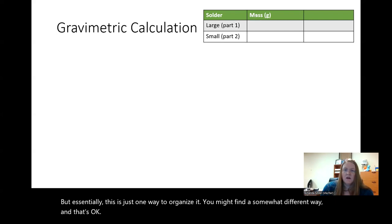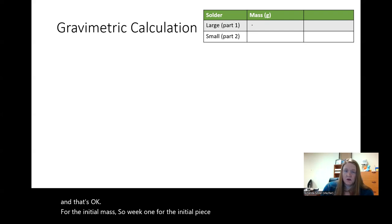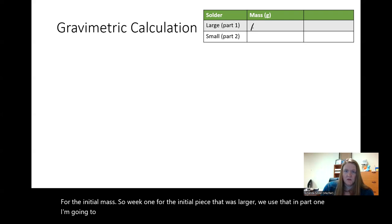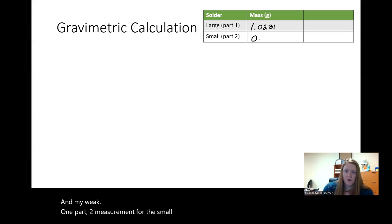For the initial mass, so week one, for the initial piece that was larger, we use that in part one. I'm going to pretend like my measurement was 1.0231 grams. And my week one part two measurement for the small piece, I'll pretend was 0.0987 grams.